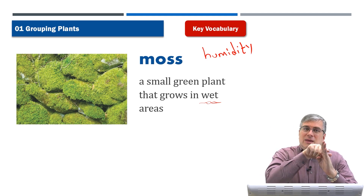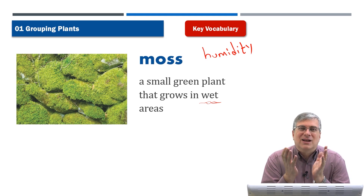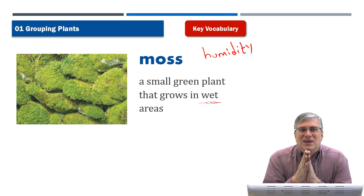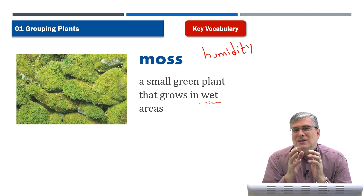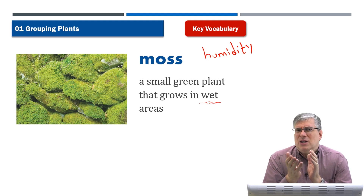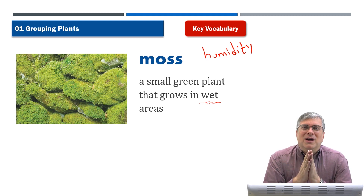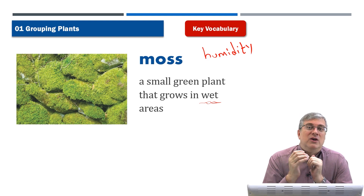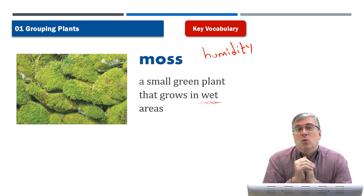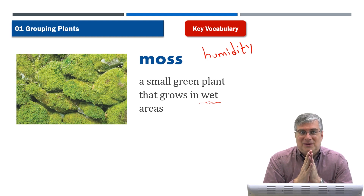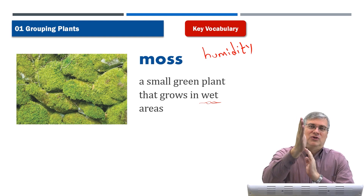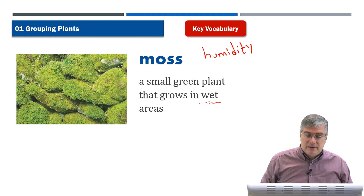So instead the moss grows on the north side of the tree. It's kind of an interesting thing. It's not always reliable — it depends on where you are — so it's better to use a compass. But it's a common saying: moss grows on the north side of a tree. So if you want to know which direction is north, look for the moss.